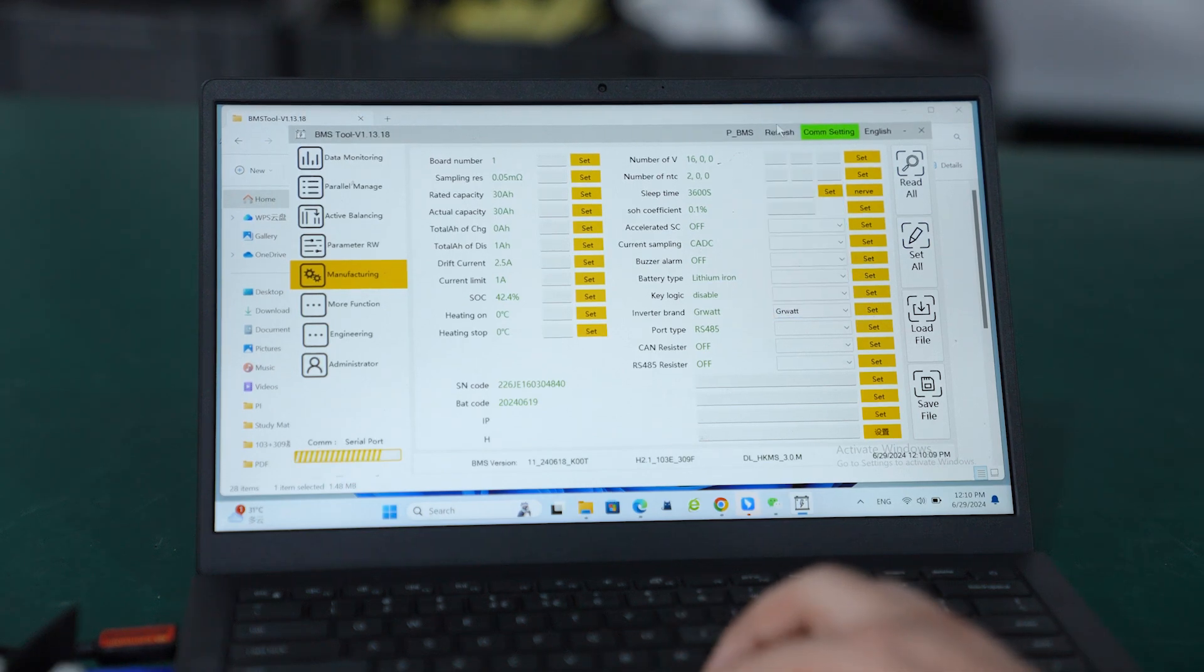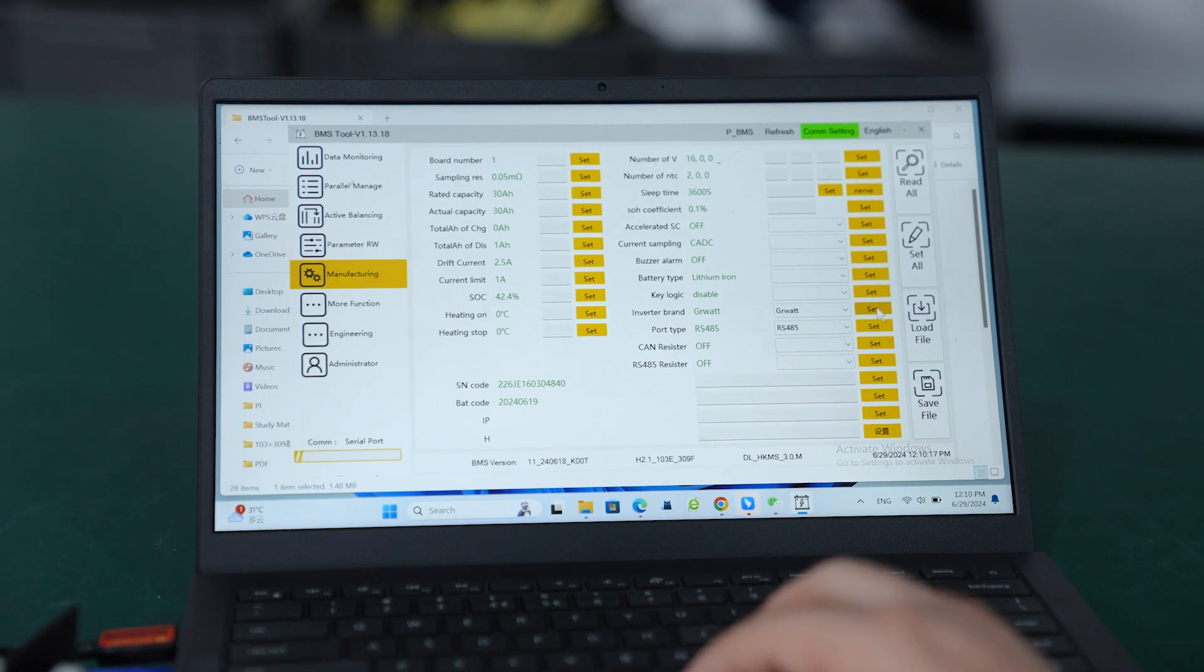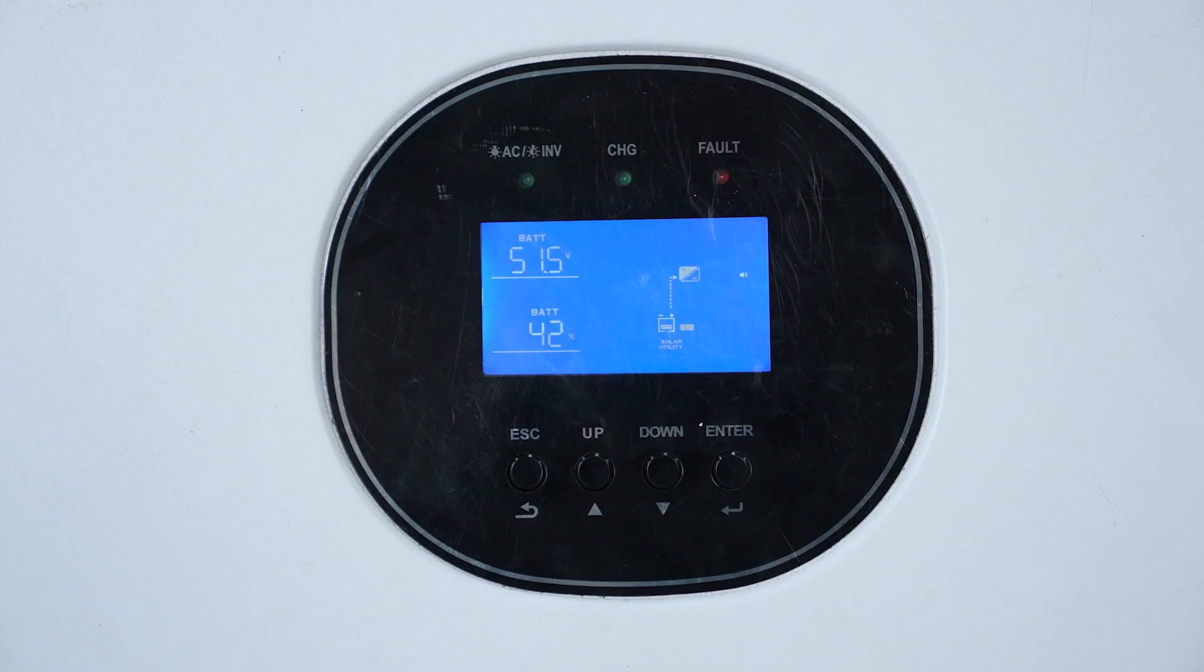The second option is port type. We are using RS485, so we need to select 485. Select both of them and click set. It's all set now.